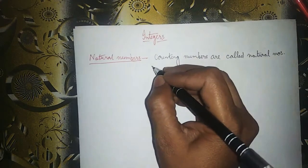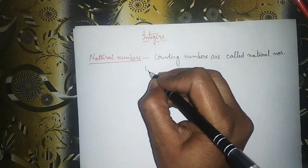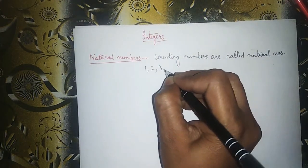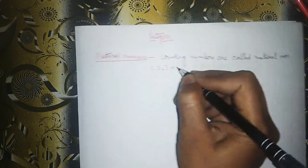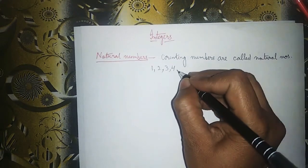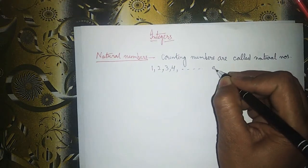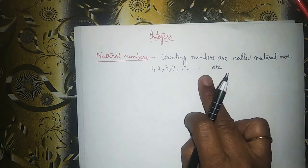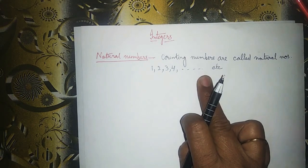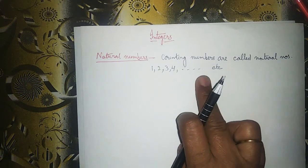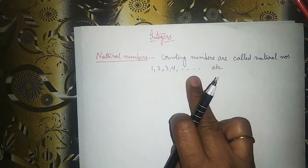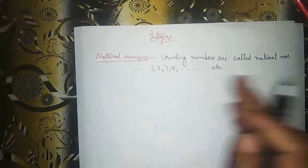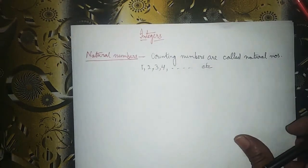1, 2, 3, 4, and so on — these all are counting numbers, and these are known as natural numbers.